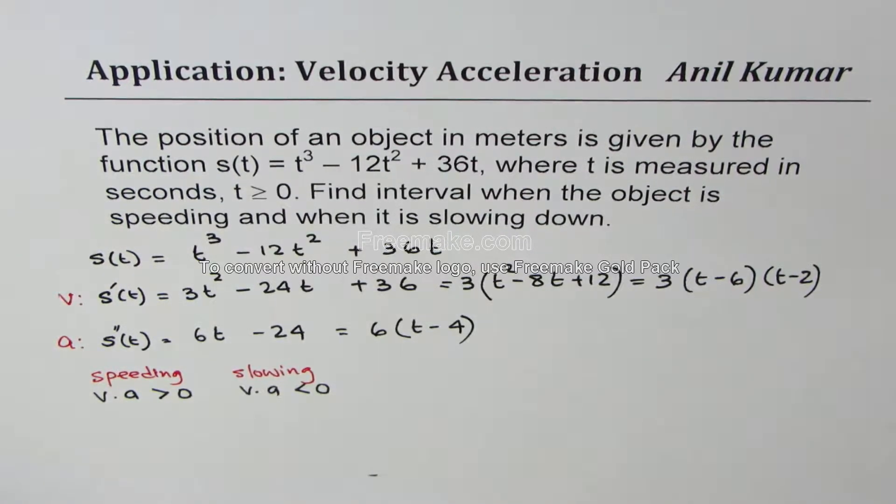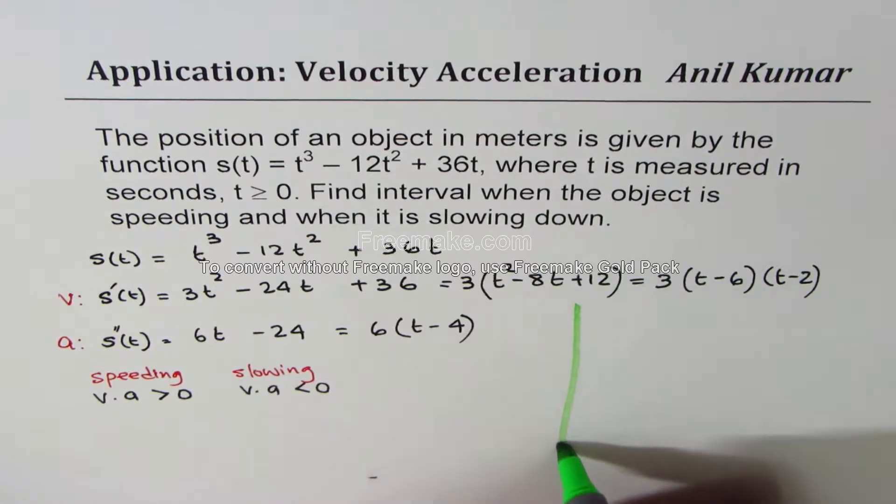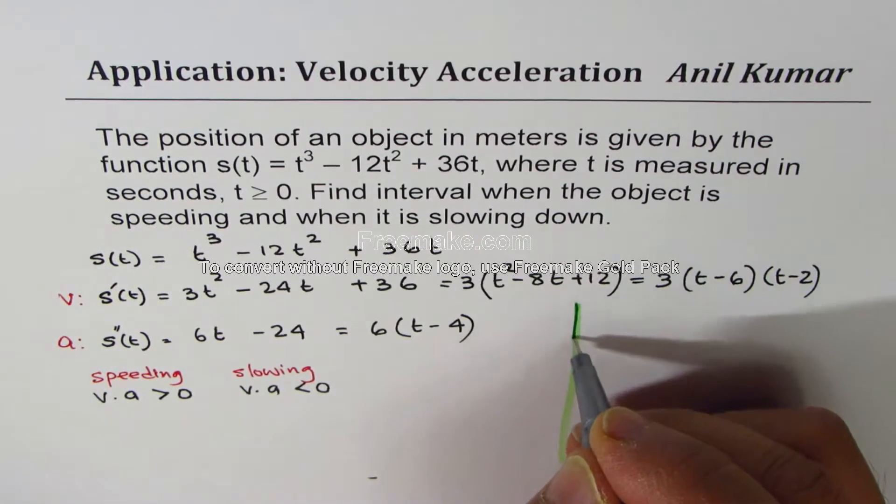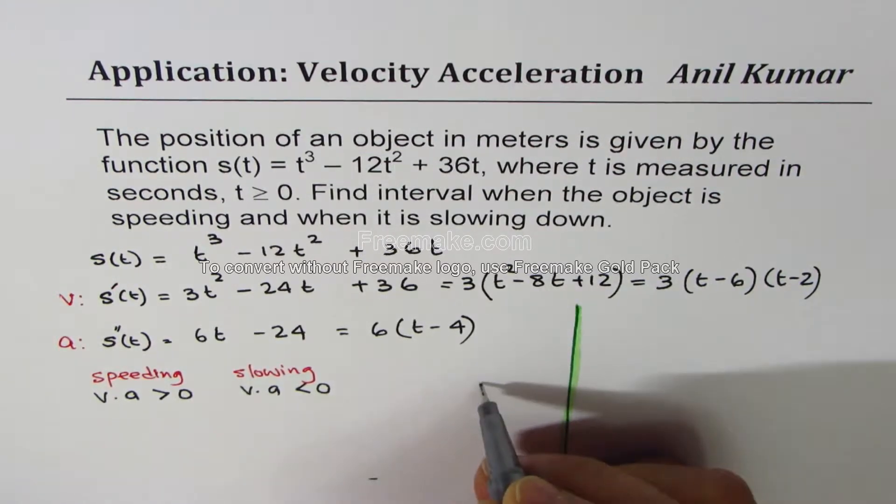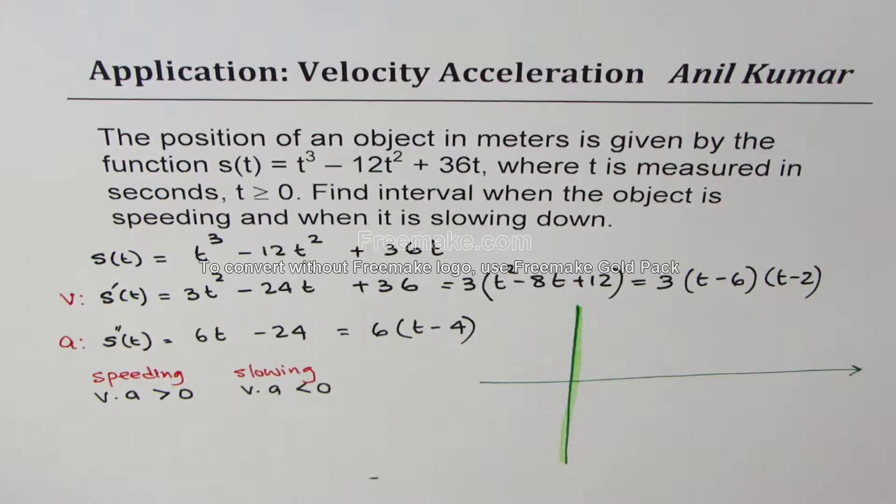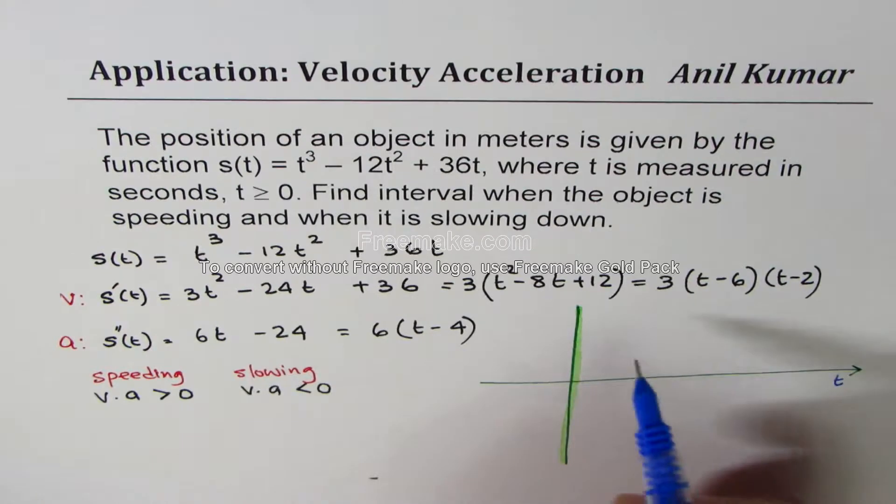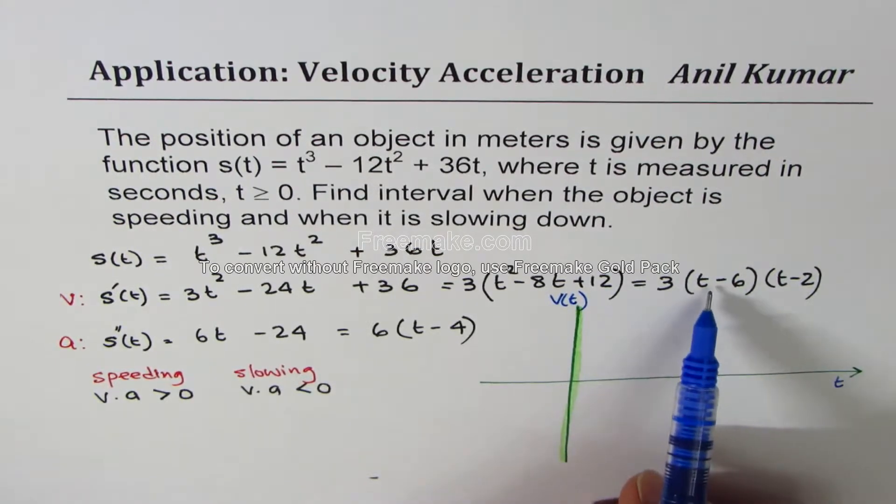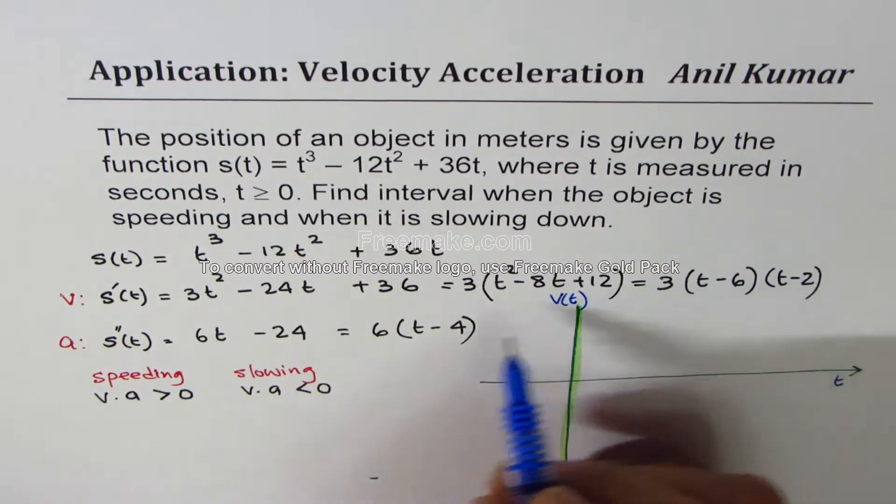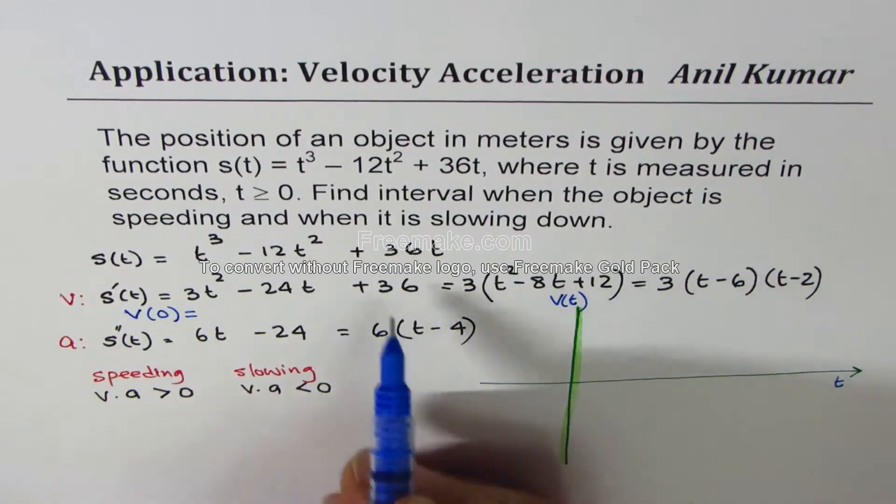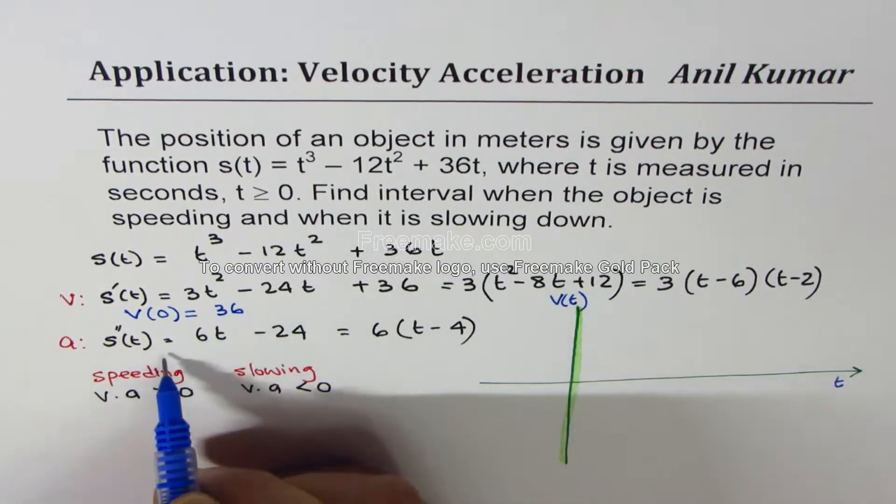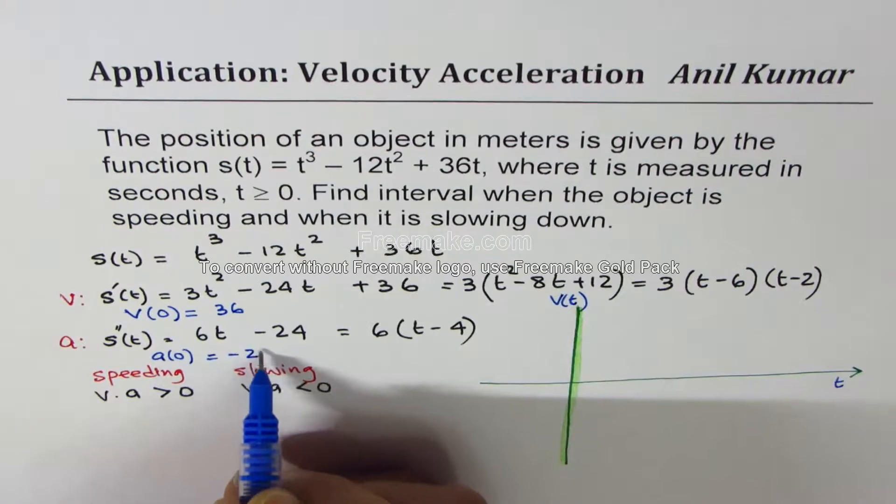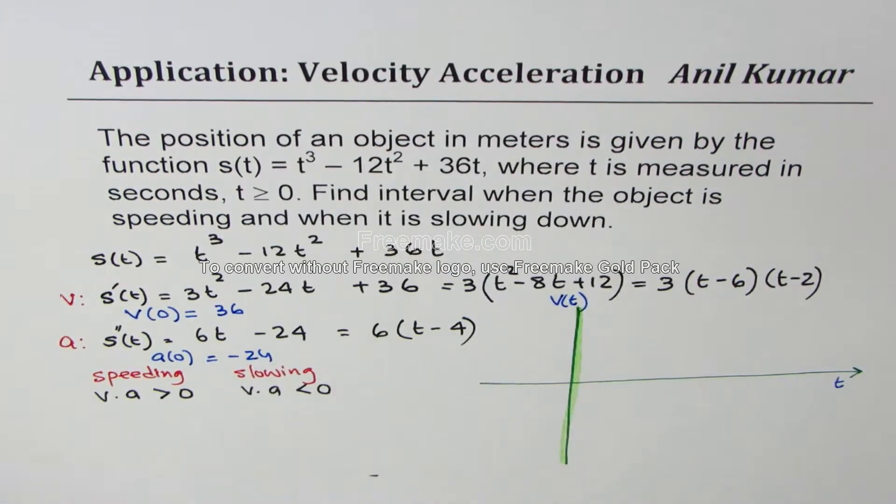Now, when is velocity positive? When is acceleration positive? To figure that out, it is better to graph them and then check. Let's graph. Since we know that t is greater than 0, that's kind of our scale. We'll put t on this side and let's graph first velocity. Velocity is a parabola where zeros are at 6 and 2. And if I write t = 0, let's find what is velocity at 0. It is just 36. Similarly, acceleration at 0 is minus 24. So t is 0, that gives us the initial value.